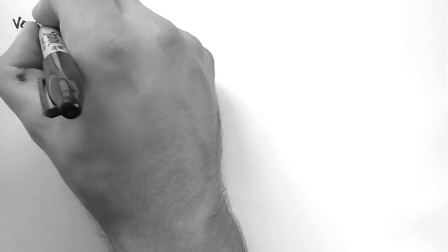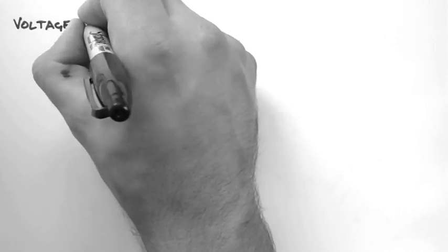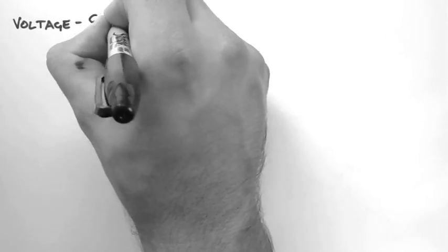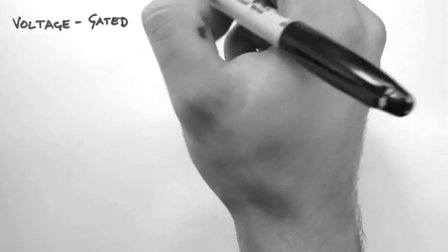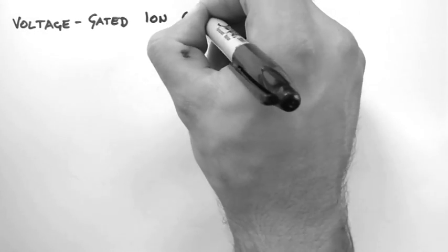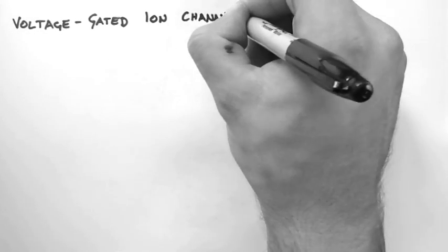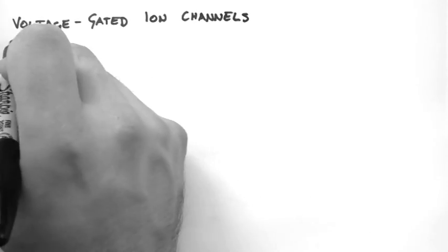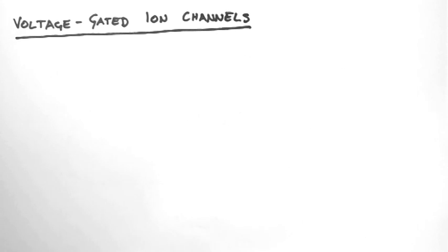Hi, in this video I'm going to talk about voltage-gated ion channels. These are the channels which change the membrane potential and thus allow an action potential.